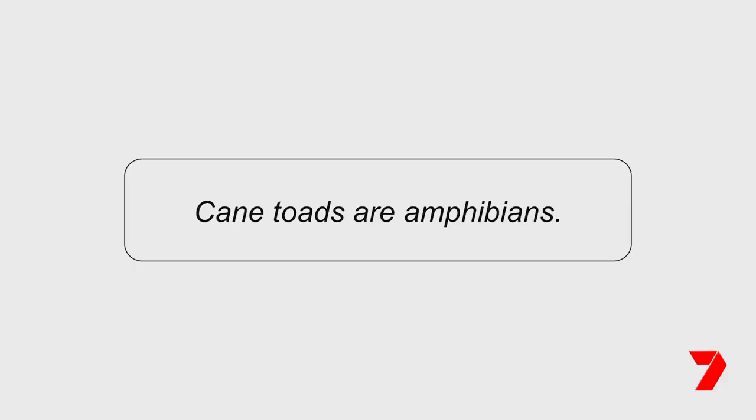A simple sentence has one main clause. This means it contains a subject and a verb and makes sense on its own, expressing a complete idea or thought. An example of a simple sentence is: cane toads are amphibians.